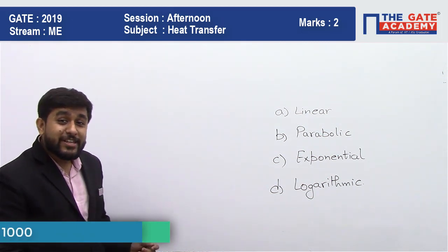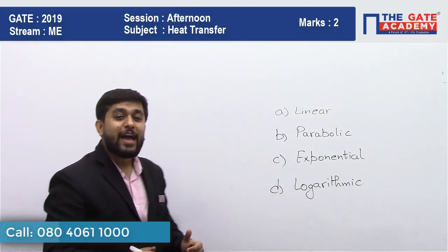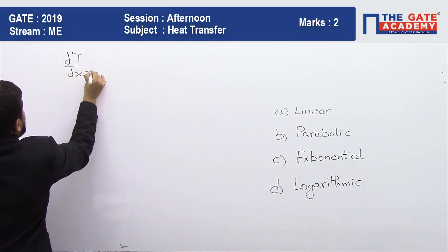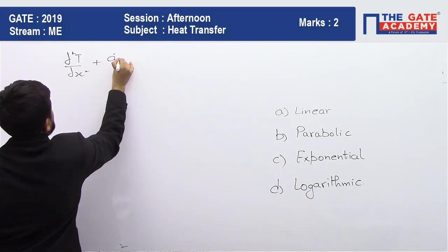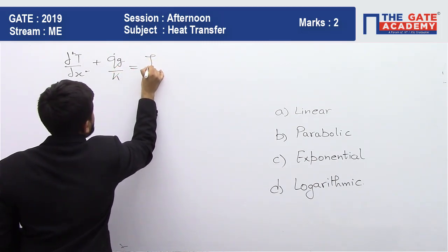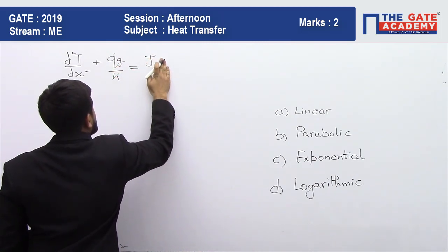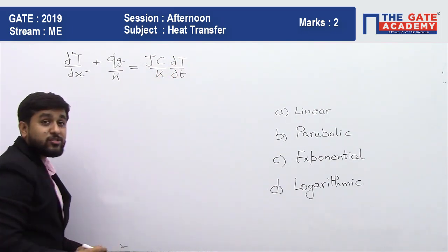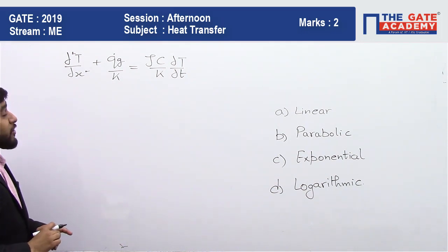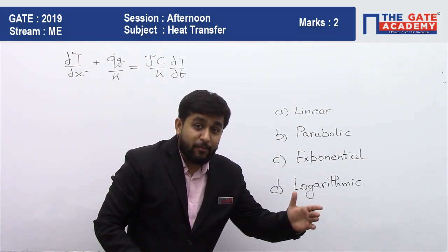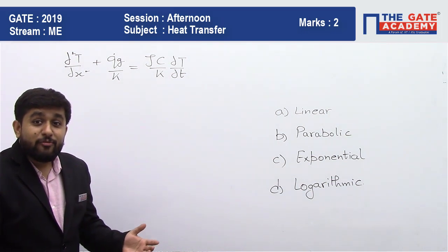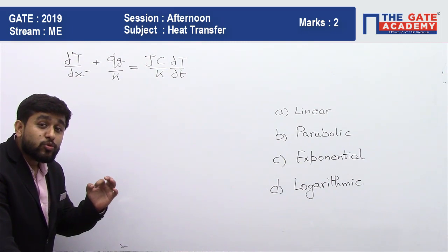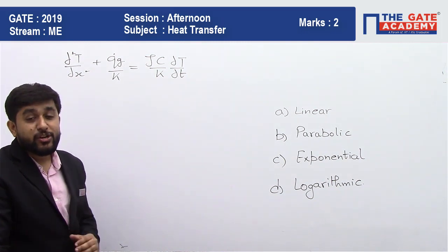The generalized heat conduction equation for one dimension is written like this: del square t by del x square plus q dot g upon k equals rho c upon k del t by del tau. I hope all of you are aware of this generalized heat conduction equation where t is the temperature, x is the x dimension, rho is the density of material, c is the specific heat, k is the thermal conductivity of material and q dot g is the internal heat generation rate.